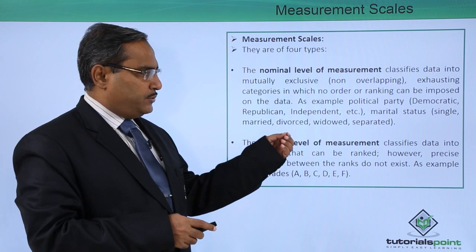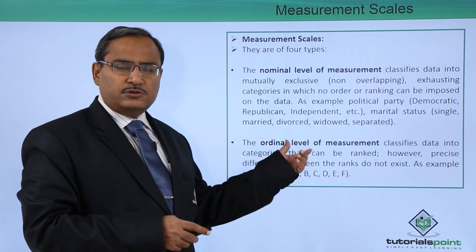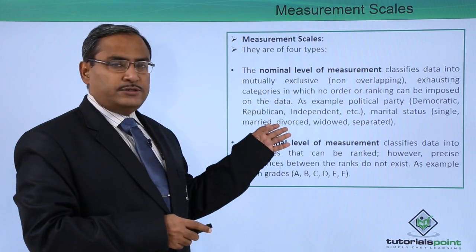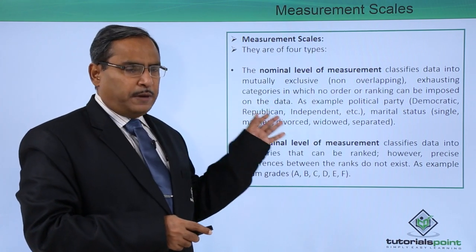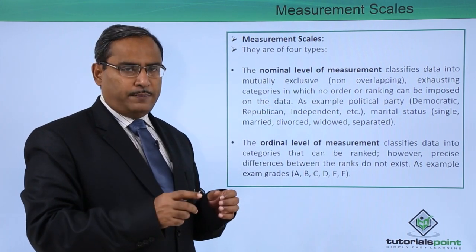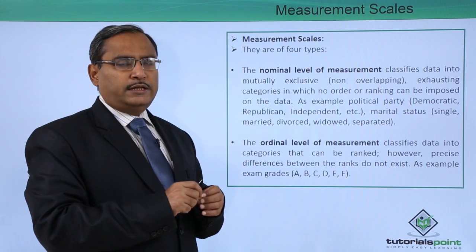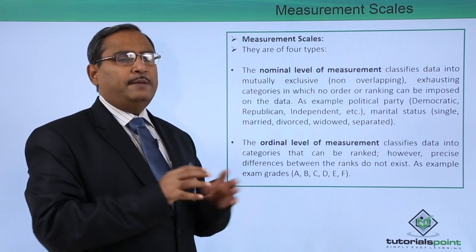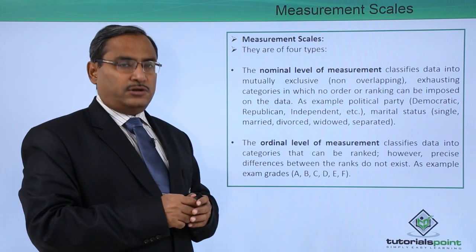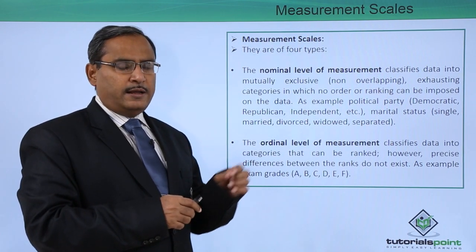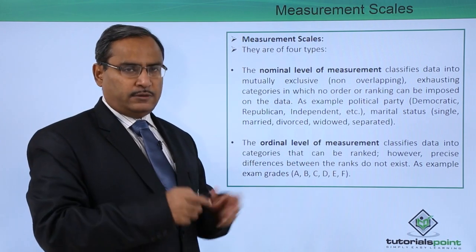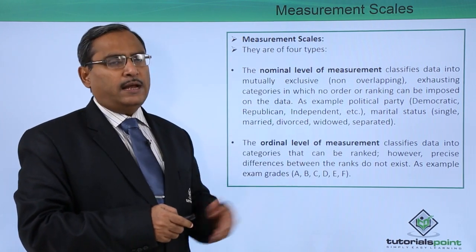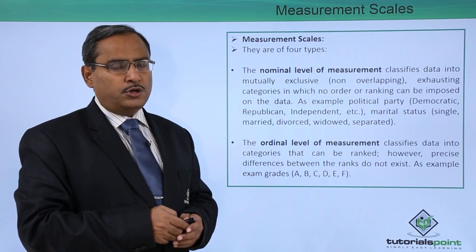Another example is marital status — values like single, married, divorced, widowed, separated and so on. These particular categories are non-overlapping, meaning there is no overlap in between. They are non-overlapping, mutually exclusive and exhaustive, meaning each and every data must get a value from those options. And no ordering or ranking can be imposed on the data.